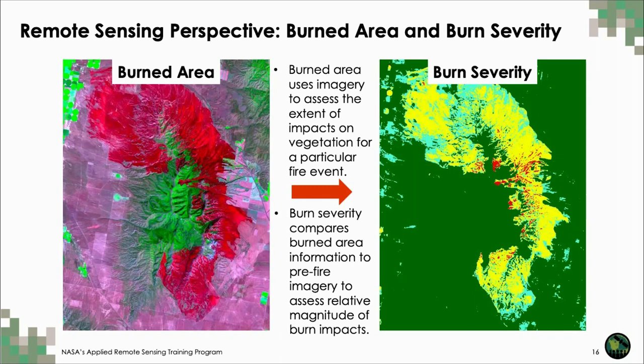From a remote sensing perspective, we usually assess post-fire landscape impacts with two metrics: burned area to determine the spatial extent and location of burn scars, and burn severity to determine the relative impact of a fire on a landscape. With these two metrics, we're able to use remote sensing imagery to assess the extent and magnitude of fire impacts over large areas.